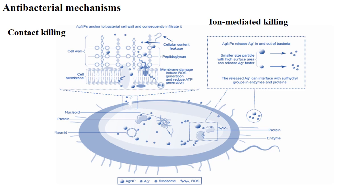Once silver nanoparticles enter the bacterial cell wall and reach the cytoplasm, they interact with different biomolecules and cellular organelles. This leads to the production of reactive oxygen species (ROS) such as hydrogen peroxide, superoxide, and singlet oxygen. When ROS production increases, it creates an imbalance between ROS and antioxidants, leading to damages like lipid peroxidation and DNA damage, ultimately causing cell death.